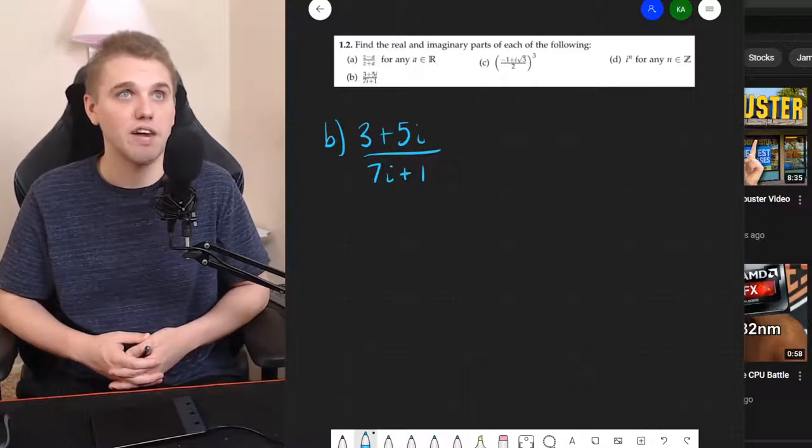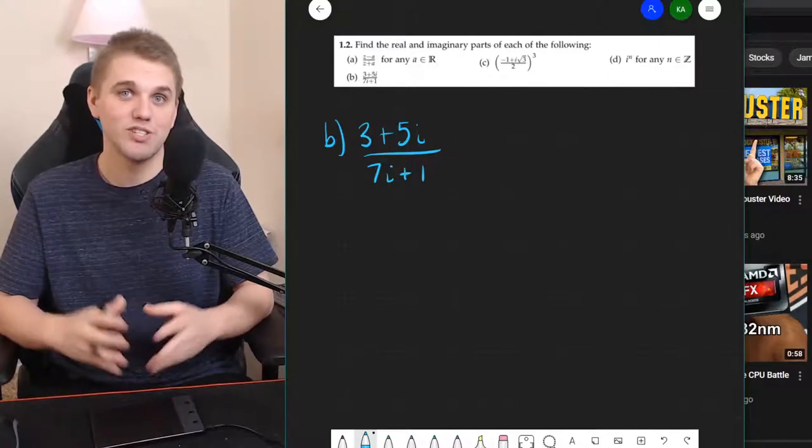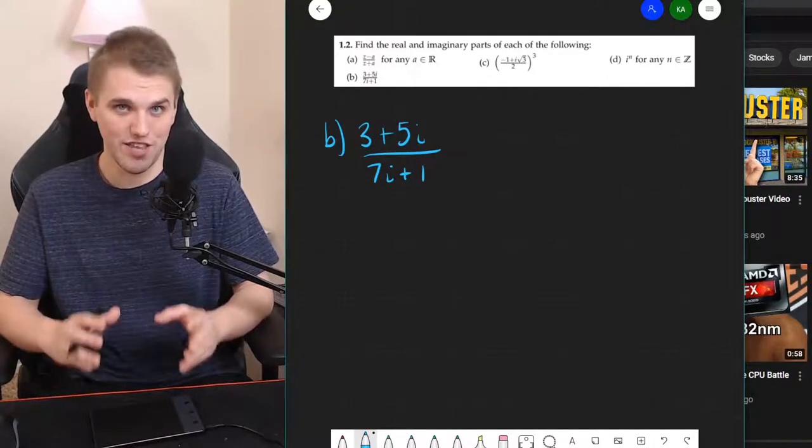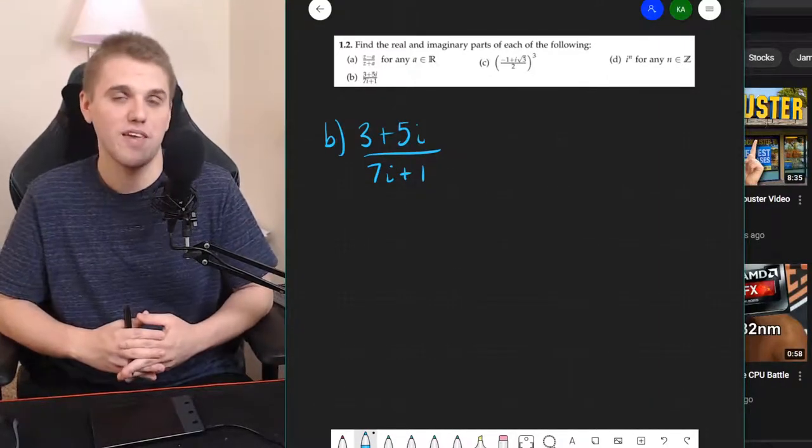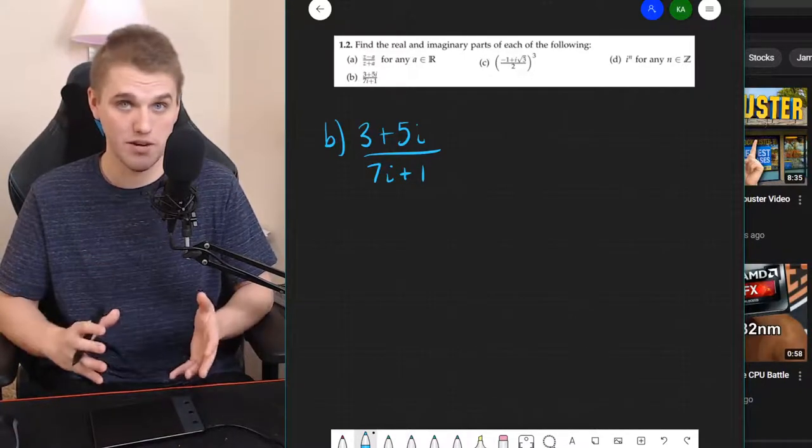So this is 3 plus 5i divided by 7i plus 1. How do we solve this problem? A really good strategy that I want you to get in the habit of is to get rid of all imaginary parts in denominators.